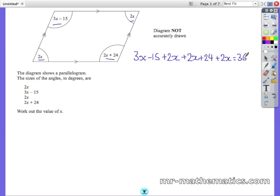Now we'll collect together the like terms, so 3x add 2x add 2x add 2x is 9x. Negative 15 add 24 is 9, so 9x add 9 equals 360. Now to solve this equation, we'll take away 9 from both sides, so 9x equals 351.